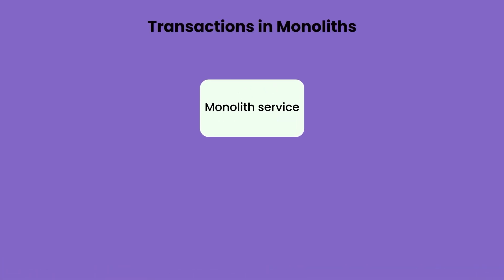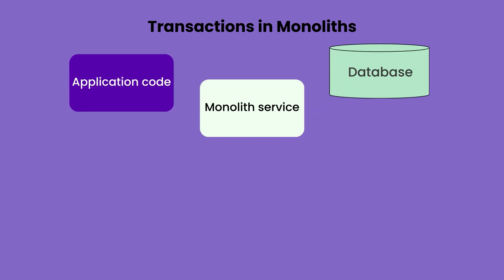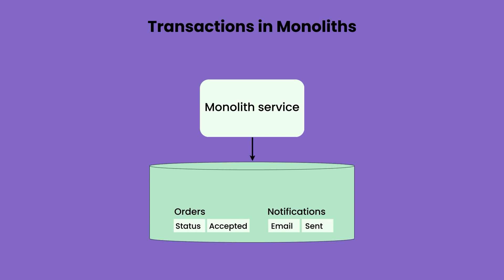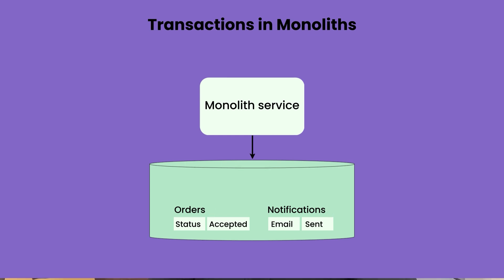When you have a monolith system, you just have one service — maybe your application code and your DB are deployed on the same instance, or your DB is deployed on a separate instance. In any case, you have just one database and different tables. Whenever you have to make updates to two tables for one business flow, you just use a simple transaction, put a lock on both rows, update the rows, release the lock, and commit. It is very easy.